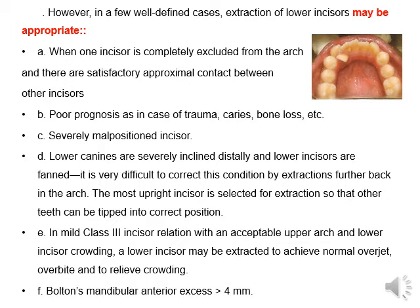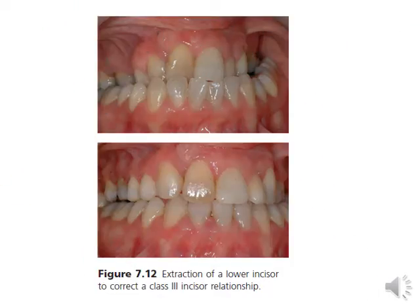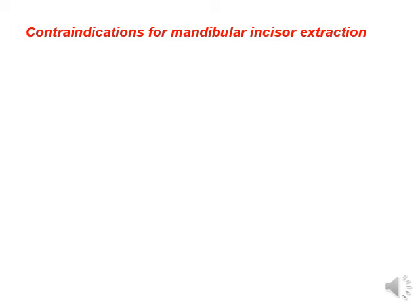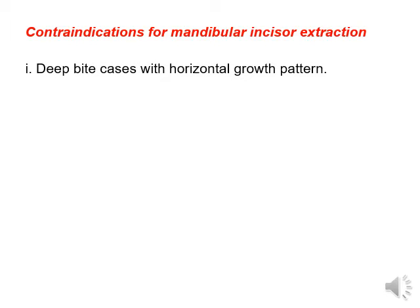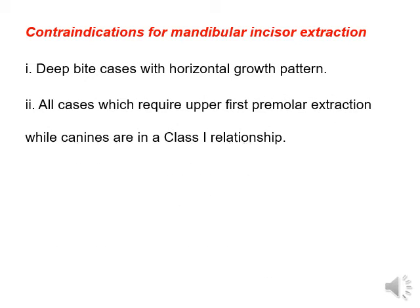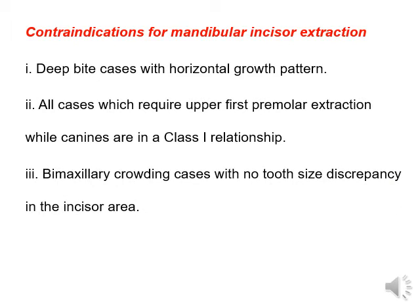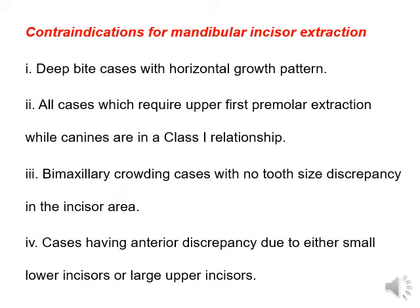Bolton's mandibular anterior excess of more than 4 mm is an additional indication. Contraindications for mandibular incisor extraction include: cases of deep bite with horizontal growth pattern; all cases which require upper first premolar extraction while canines are in Class 1 relationship; maxillary crowding cases with no tooth size discrepancy in the incisor area; cases having anterior discrepancy due to either small lower incisors or large upper incisors.